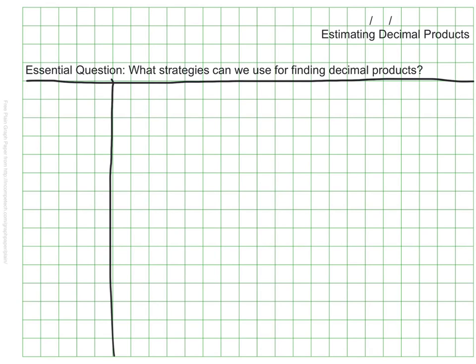As we have done with fractions and with adding and subtracting decimals, we always want to be thinking of an estimate when we work with decimal products. Good mathematicians always know a ballpark figure for their answer before and while performing a calculation.